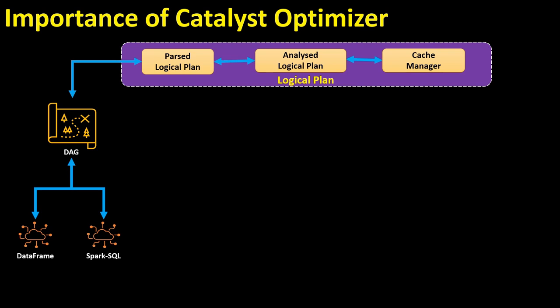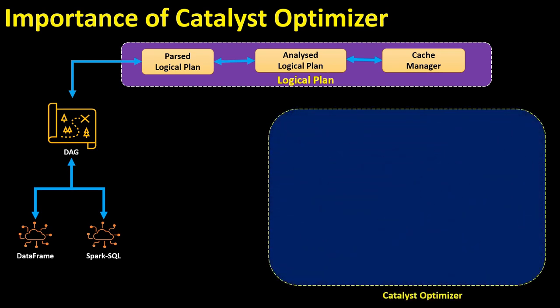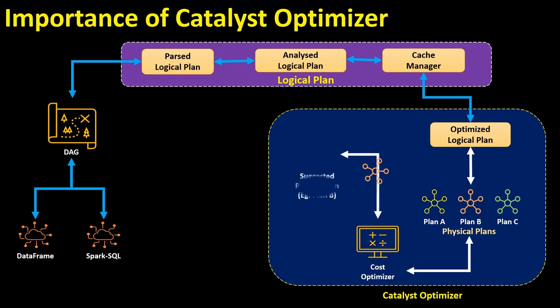In the Analyzed Logical Plan, you can validate what the job does and align the plan. You can also locate the Catalog Manager. The Catalyst Optimizer creates an Optimized Logical Plan — you can create new plans, gather all the stage information, and validate all the cost to suggest the best final plan.